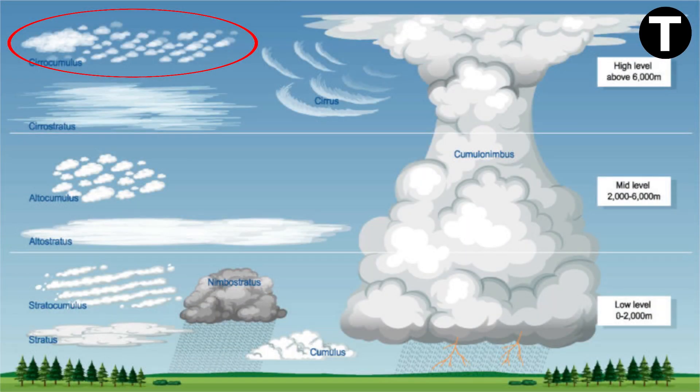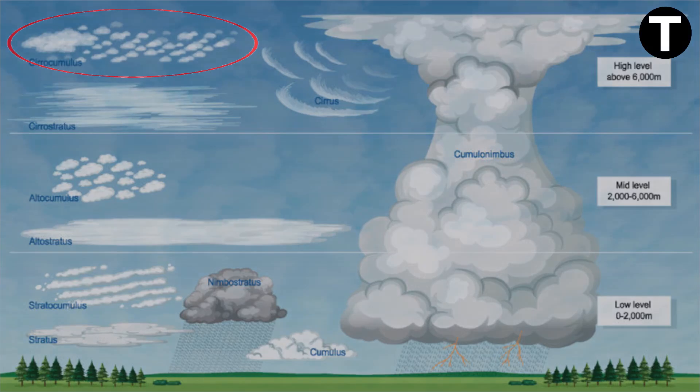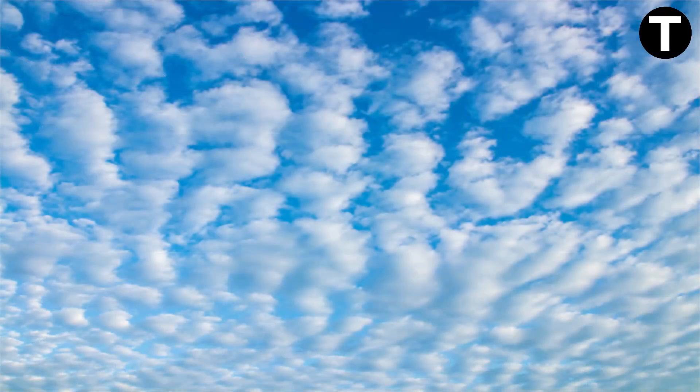Meet cirrocumulus clouds, resembling tiny cotton flowers. They're made of ice crystals or supercooled water droplets, possibly signaling the arrival of fronts.